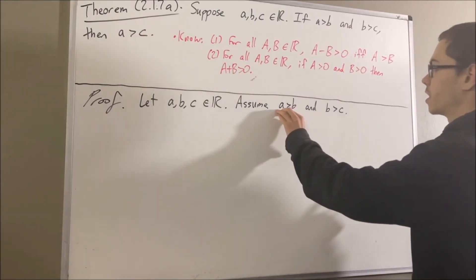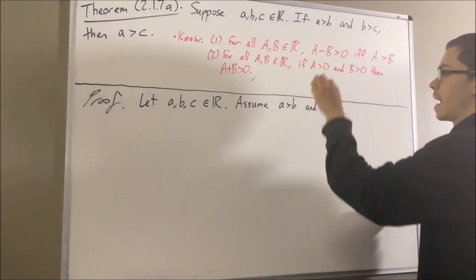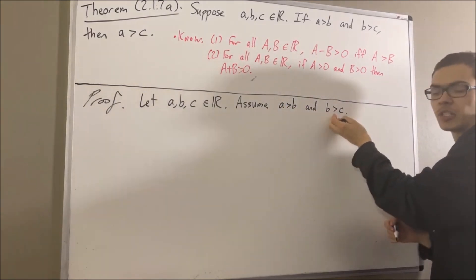Now, since a is greater than b, it follows from fact number one that a minus b is greater than zero. And similarly, b minus c is greater than zero.